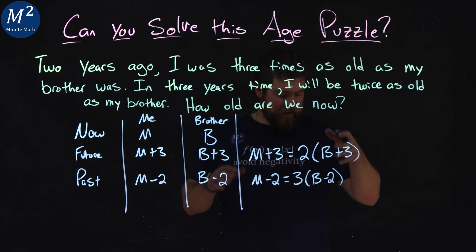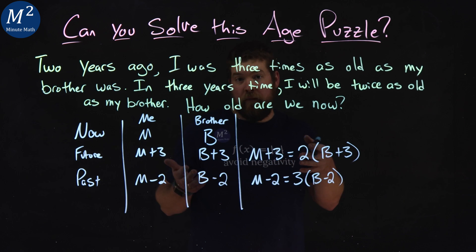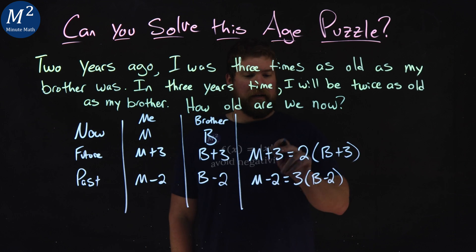And now what we have here is a system of equations. We have two equations with two variables each, and we need to solve them. So let's take the first one here, M plus three equals two times B plus three. I'm going to try to get M by itself.